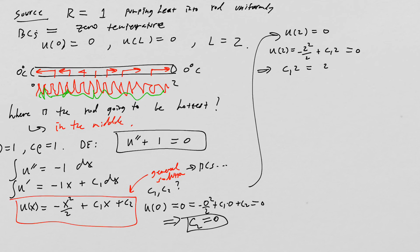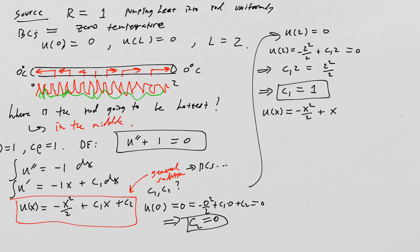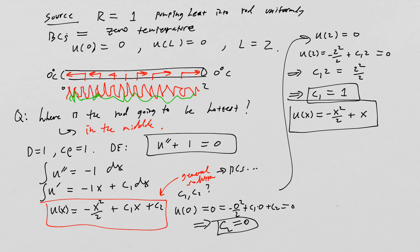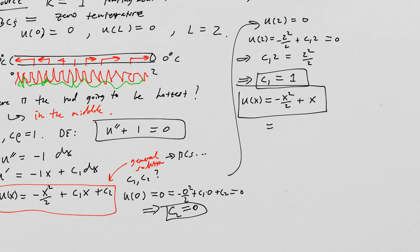Solving gives c₁ equals one. So our equilibrium temperature distribution is u(x) equals negative x squared over two plus x. We can factor this as x times (one minus x/2), or equivalently (x/2)(2 minus x), which is a downward-facing parabola with roots at x equals zero and x equals two.